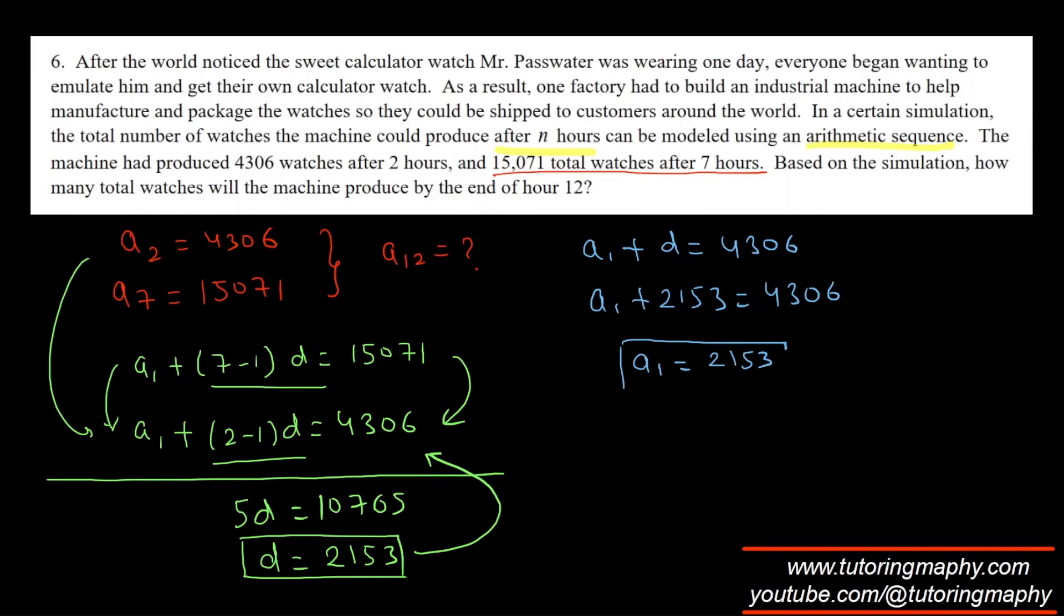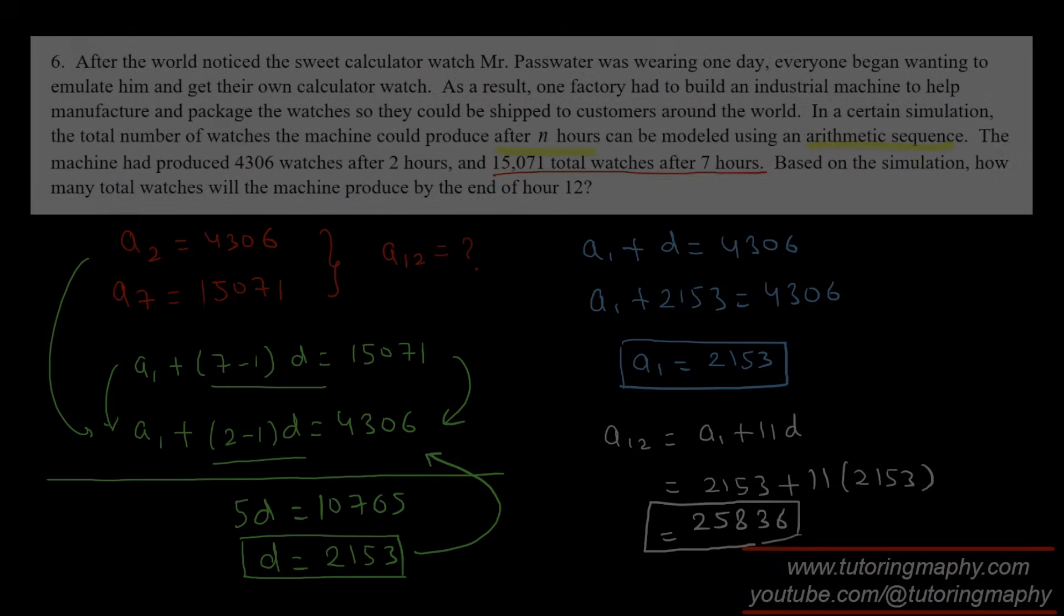They are interested in the value of a12. So a12 is going to be a1 plus 11d, which is going to be 2,153 plus 11 times 2,153, and this is 25,836. That is the final answer.